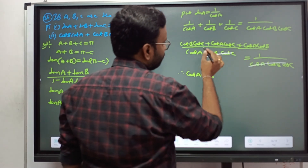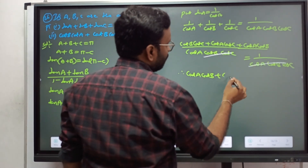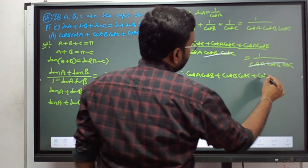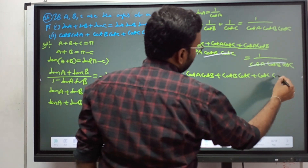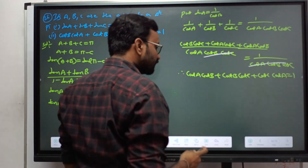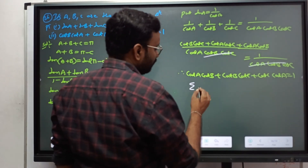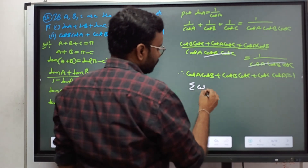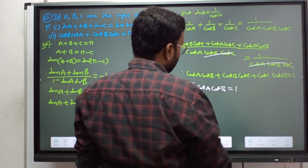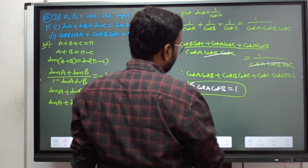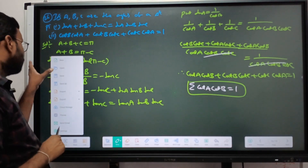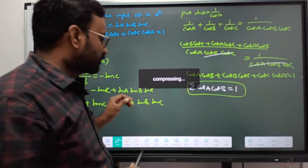So the final result is: cot A · cot B + cot B · cot C + cot C · cot A = 1. We can also write this as the summation of cot A · cot B equals 1. This is the formula — proven.